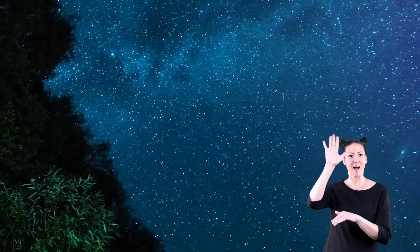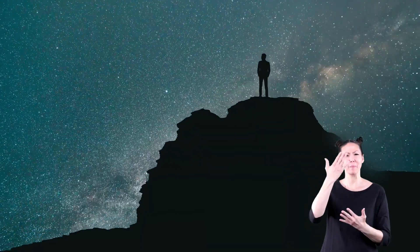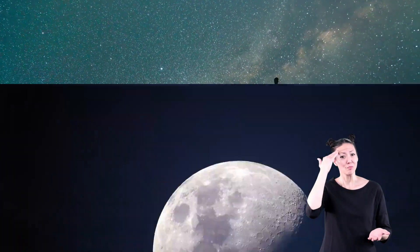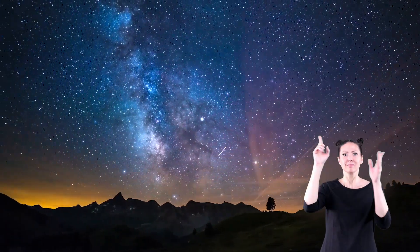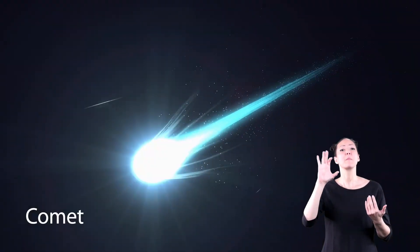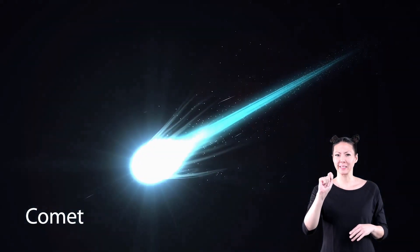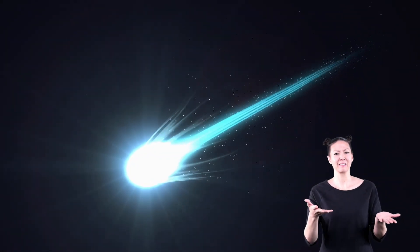When you look up at the night sky and see all the twinkling stars, do you ever wonder what else is up there? You know there's a moon. You also know that there are planets. But did you know that there are other objects in the sky as well? One of those objects is called a comet. So, what exactly is a comet?